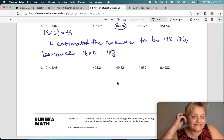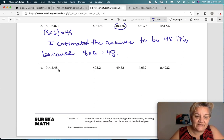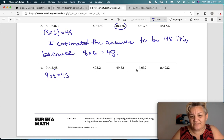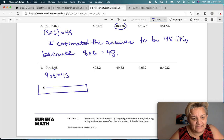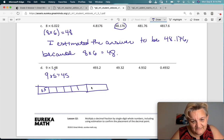And letter D. 9 times 5.48. Well, if we want to round to the tenths, that would be 5.5. If you want to round to ones, that would be 5. So, 9 times 5 equals 45. Well, none of those even look like 45. So, let's just use a picture here. And instead of 5.48, let's just say 5.5. We're going to round up that tenth spot.